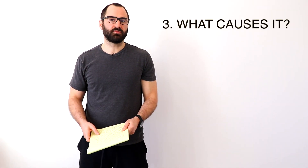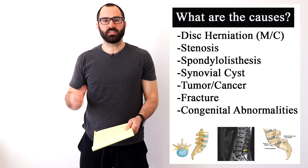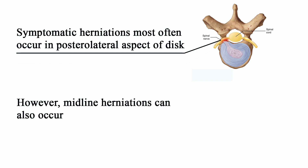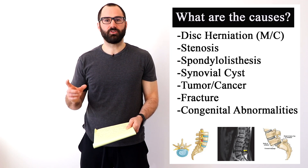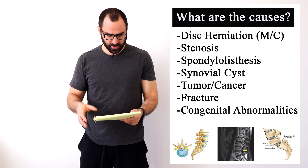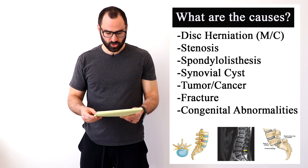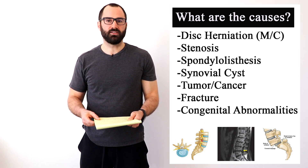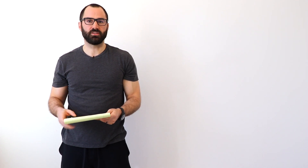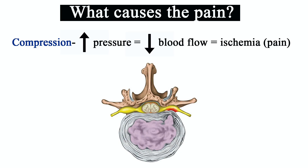So what is actually causing the symptoms that you're experiencing? When the disc presses on the nerve through a disc herniation — which is most common — it's important to note that other things can actually cause this, such as lumbar stenosis, which is narrowing of the central canal of the spinal column; spondylolisthesis, which is when one vertebral body slips relative to the other; synovial cysts; tumor cancers; fractures; or congenital abnormalities. For the purpose of this video we'll be only discussing disc herniations. Historically we thought the disc pressing on the nerve was the whole picture, but that's only partially correct. When the disc presses on the nerve, it causes compression, which decreases blood flow, which causes ischemia, which can cause some of the symptoms.